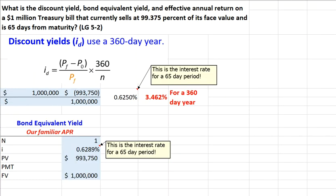Let's look at next our effective annual return. There's a formula in the chapter for calculating our bond equivalent return, but it's basically simply our old familiar APR, and we can calculate that with our calculator very easily.